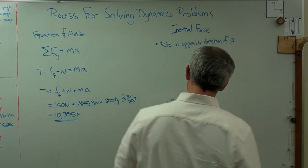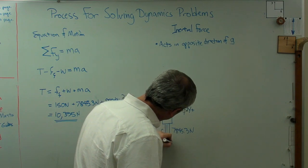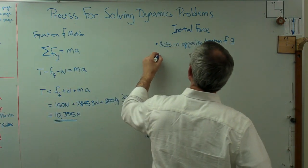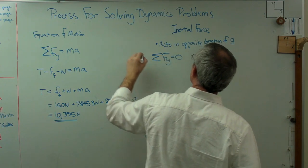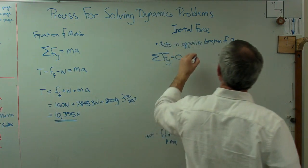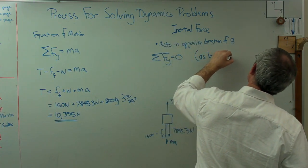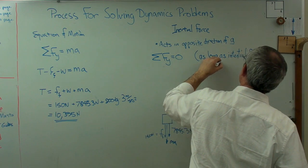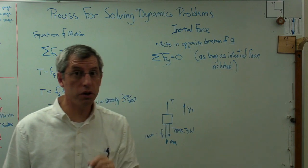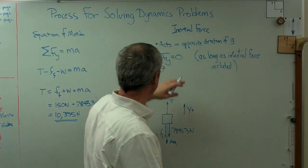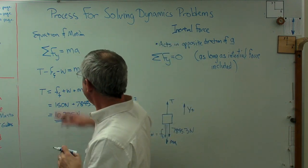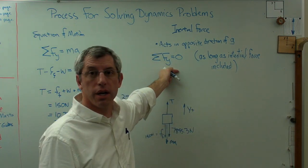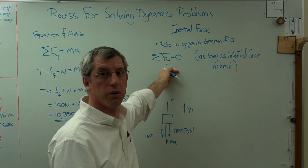So if you want to consider it a force when you sum the forces, you can now set the sum of the forces equal to zero if one of them is an inertial force. An inertial force acts in the opposite direction of acceleration. So if I were going to put inertial force in here, I'd add one more force down there, and that would be ma. Acceleration is up. Inertial force must be down. So now let's sum the forces in the y-direction equals zero as long as inertial force is included.